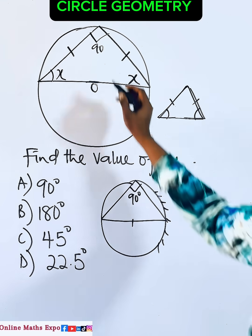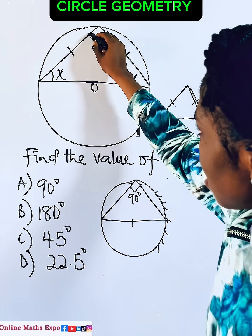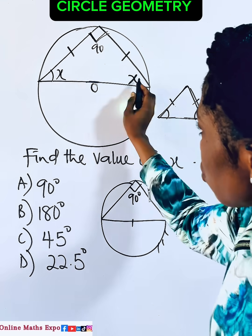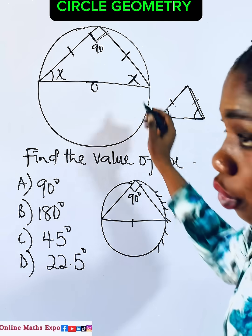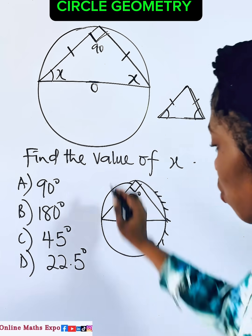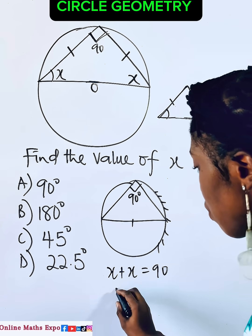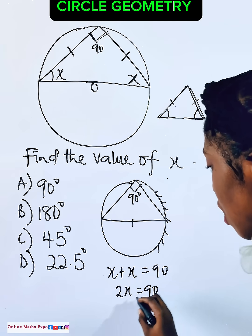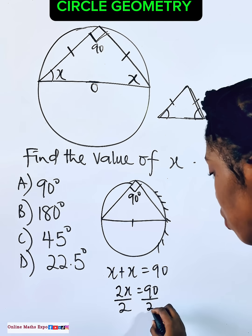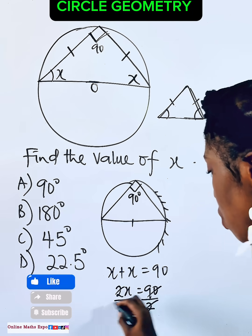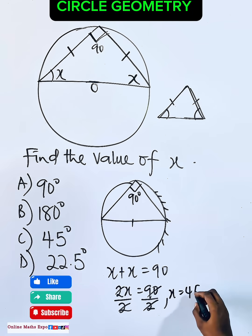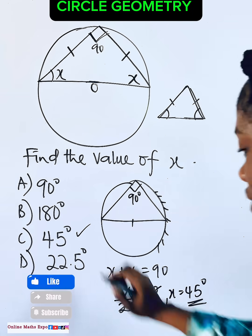So to find the value of X, remember that this part is already 90. So the remaining two parts will be summed to give you 90. And if these two parts will give you 90, when you add this, it gives you 2X = 90. So to get X, divide by 2. And when you do this, we have X is 45 degrees. And that is option C.